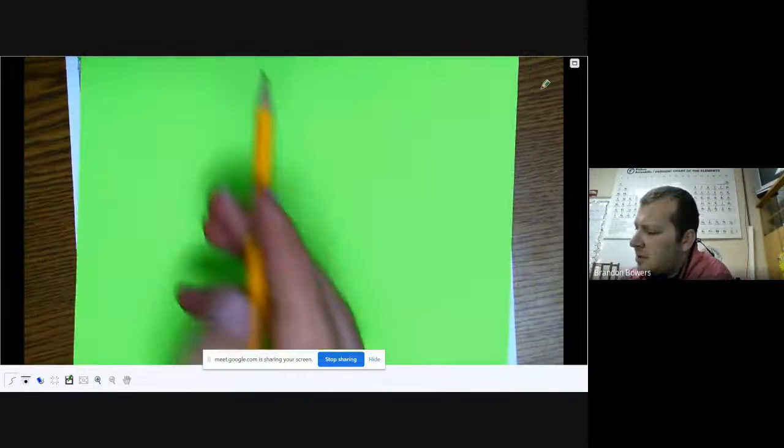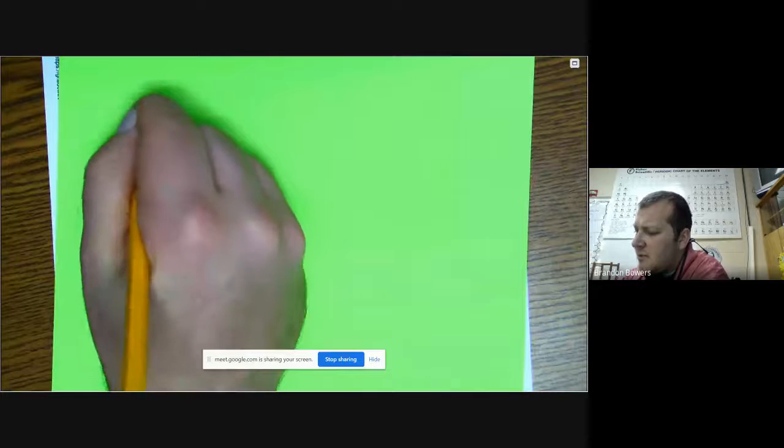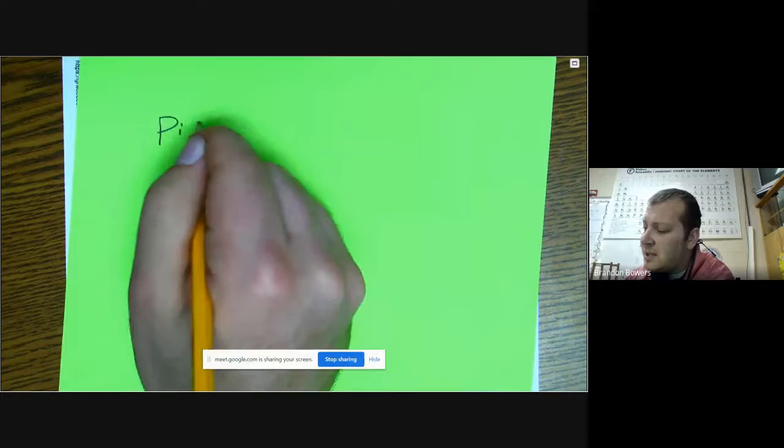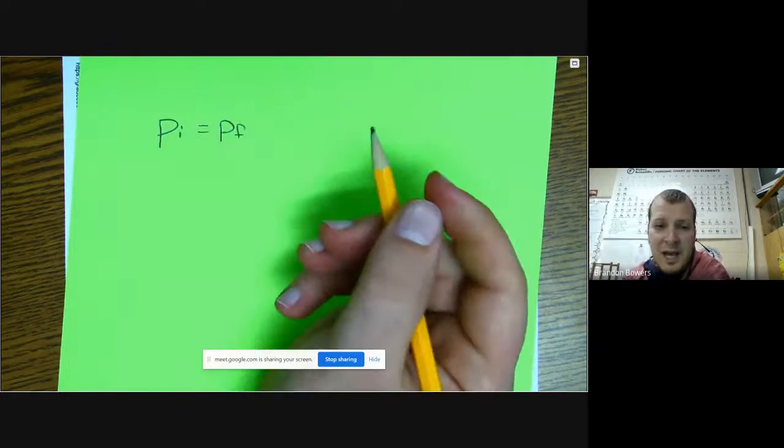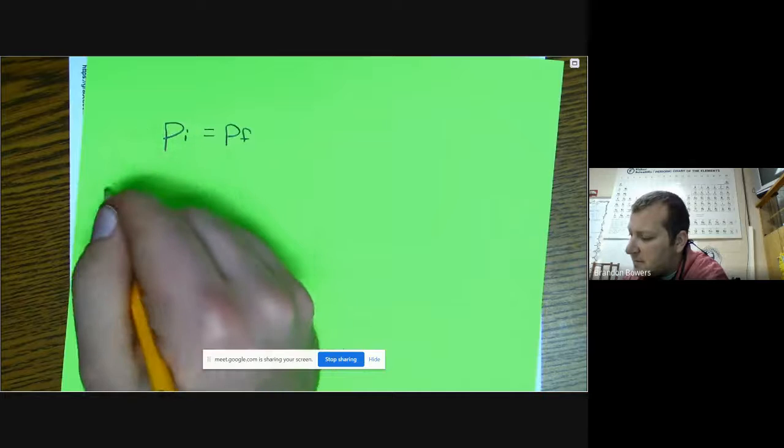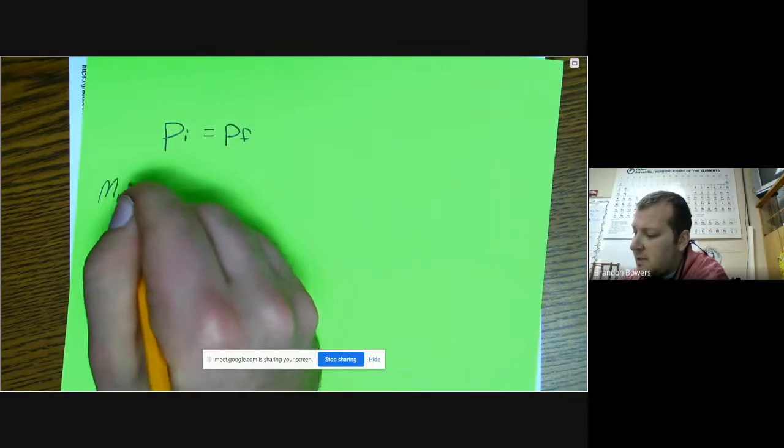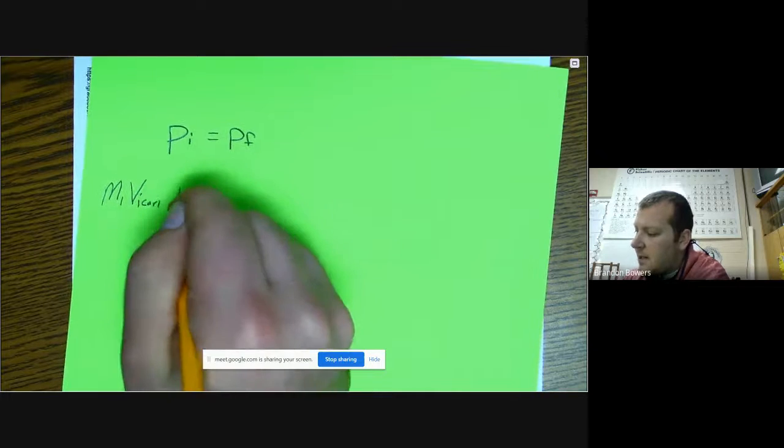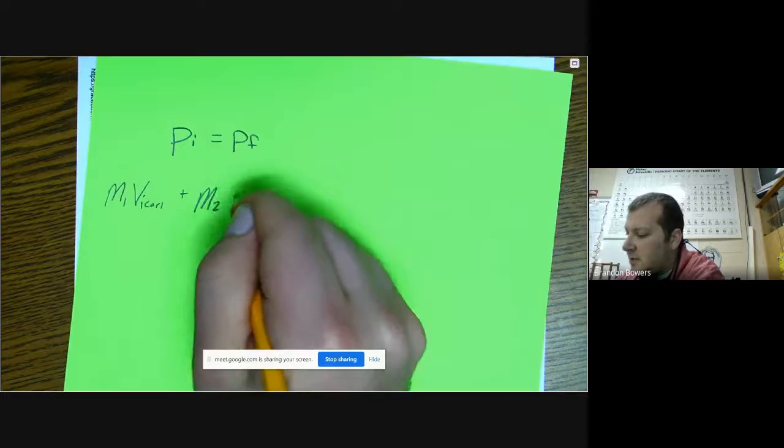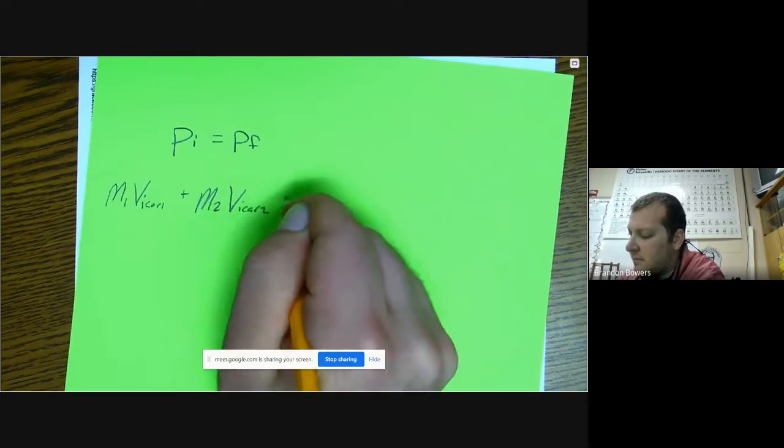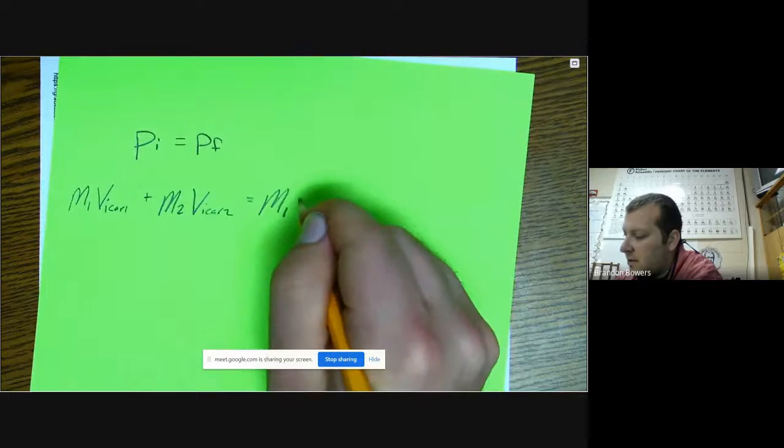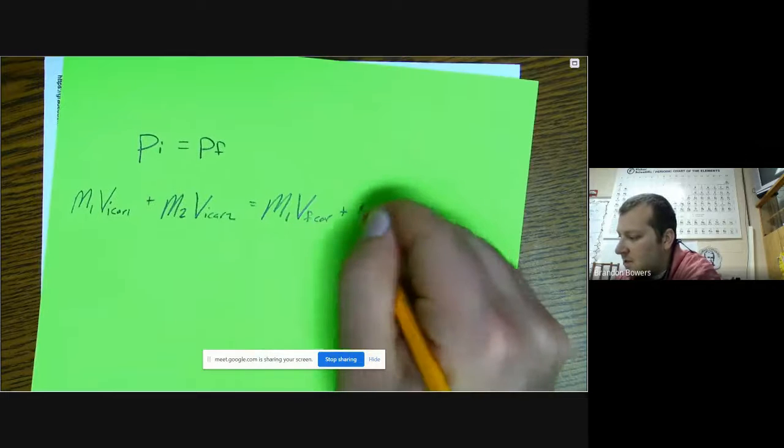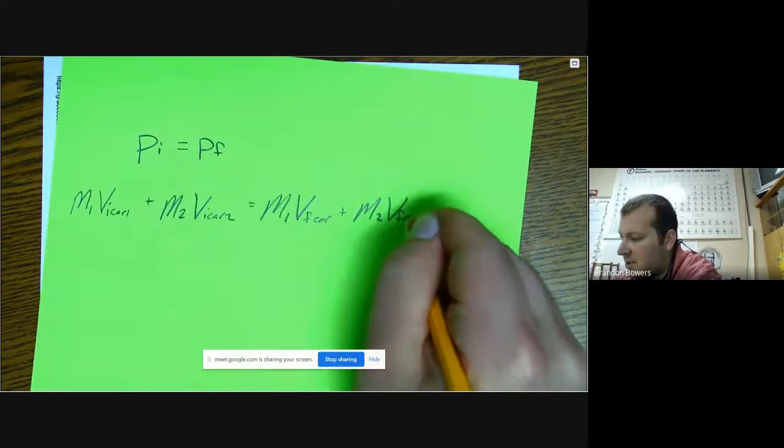Remember our equation yesterday looking at the law of conservation of momentum: momentum initial equals momentum final. When we have two cars, the mass of car 1 times the initial velocity of car 1 plus the mass of car 2 times initial velocity of car 2 equals the mass of car 1 times final velocity of car 1 plus the mass of car 2 times final velocity of car 2.